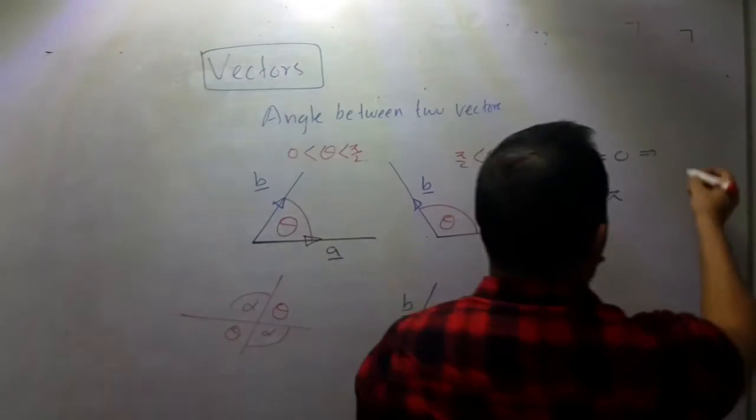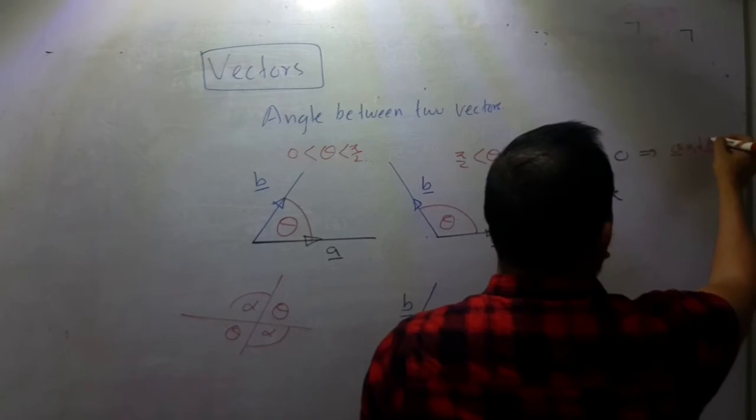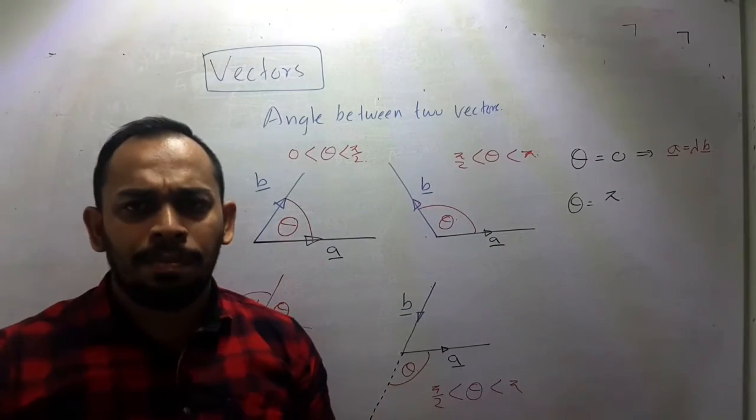What is the mathematical representation for parallel vectors? A is equal to lambda times b. So this is the mathematical representation.